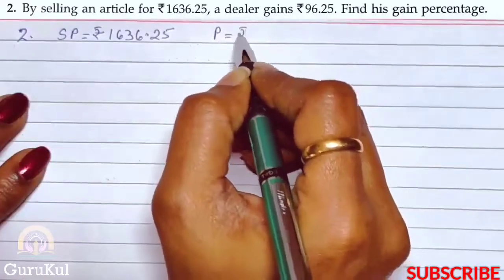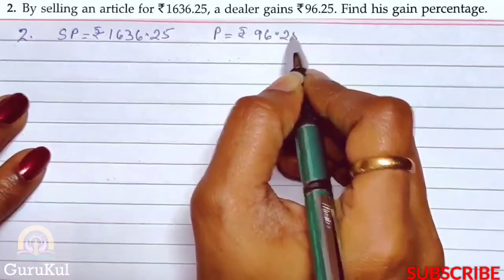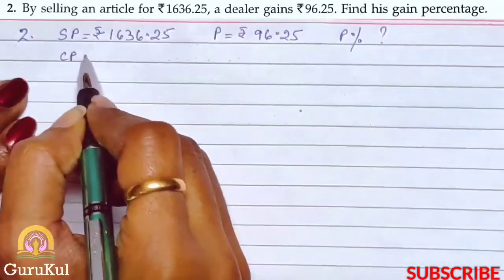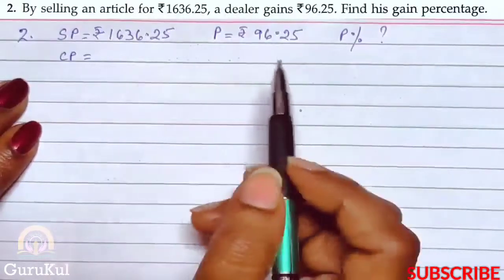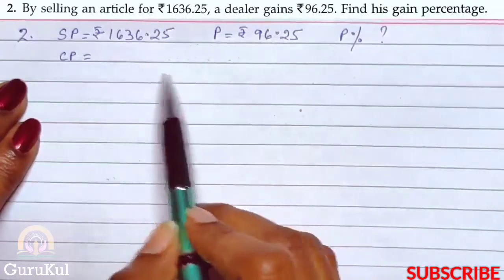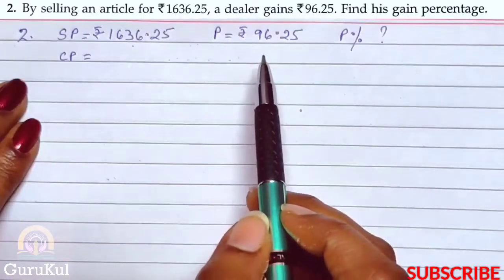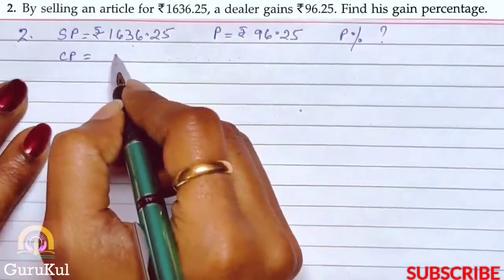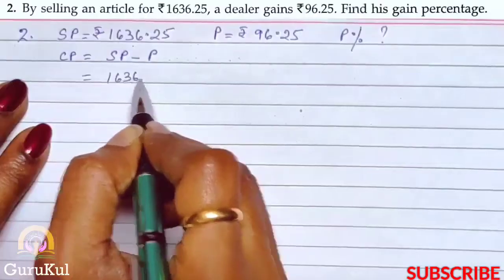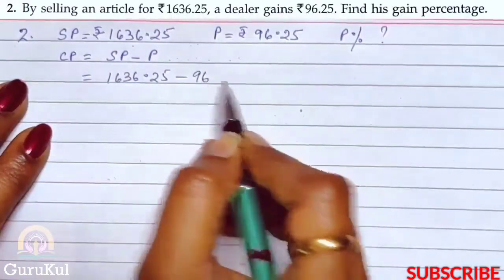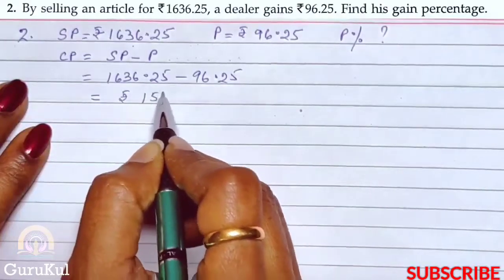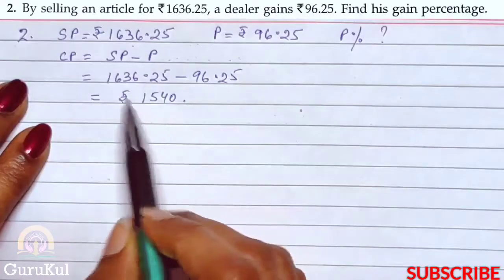So profit is equal to Rs. 96.25, and we have to find the profit percent. First, we need to find the CP, because all calculations are based on the cost price. CP is always SP minus profit. That is Rs. 1,636.25 minus Rs. 96.25, which gives us Rs. 1,540. So Rs. 1,540 is the CP.